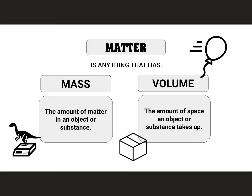So how do we really know if something is matter? Matter is anything that has mass and volume. Mass is the amount of matter in an object or substance — we can determine it by putting the object on a scale. Volume is the amount of space an object or substance takes up. If it's a regular object like a box, we can use a ruler to find its measurements and calculate its volume.